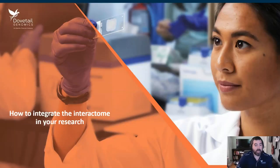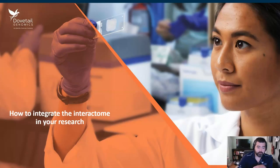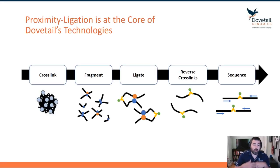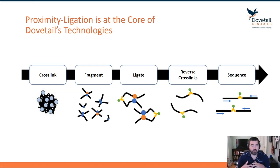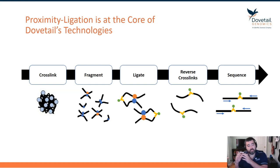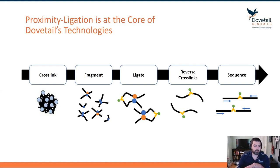This leads us to the last part of this talk: how do you go about integrating the interactome into your research? Here at Dovetail, our core technology is proximity ligation — the core workflow I talked about in the introduction, where cells are cross-linked to preserve that 3D interactome structure.